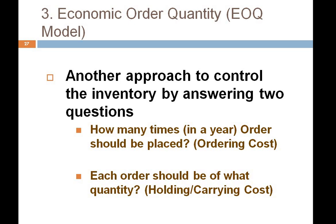The EOQ model of inventory management answers two basic questions. The first question is: how many times in a year should an order be placed? Answering this determines our ordering cost. The second question is: each order should be of how much quantity? Because the quantity held directly drives the carrying cost. These are the two basic questions that this model addresses.